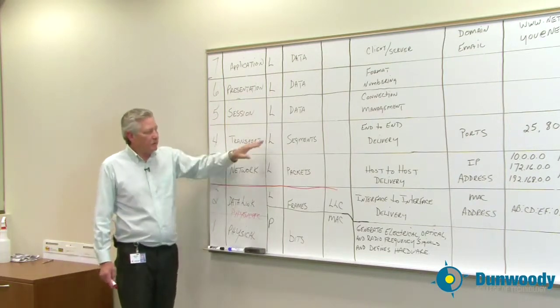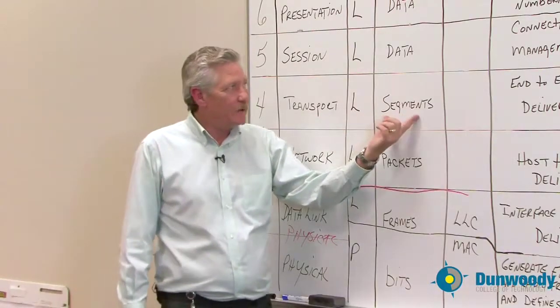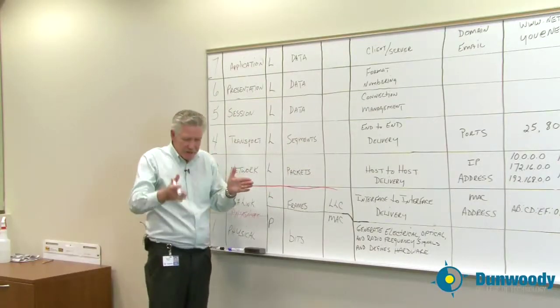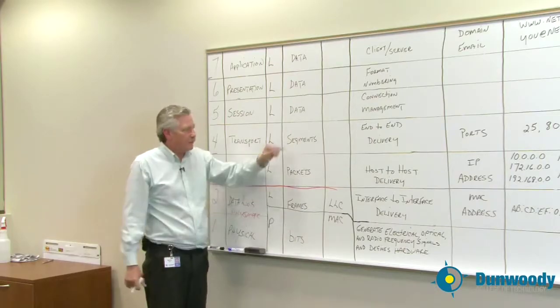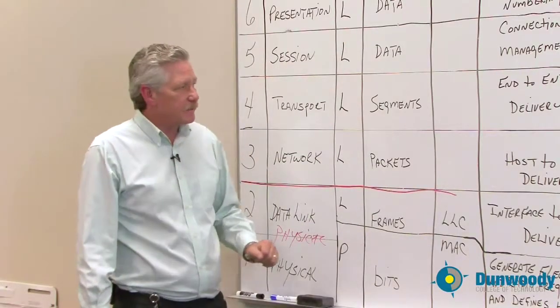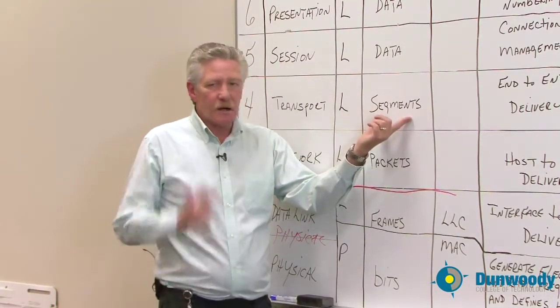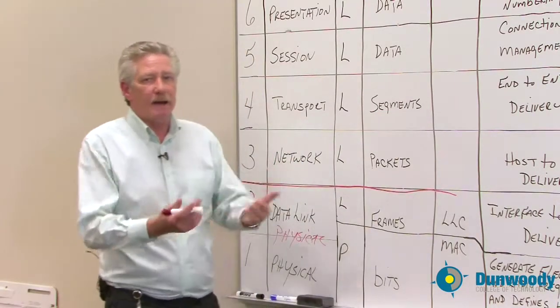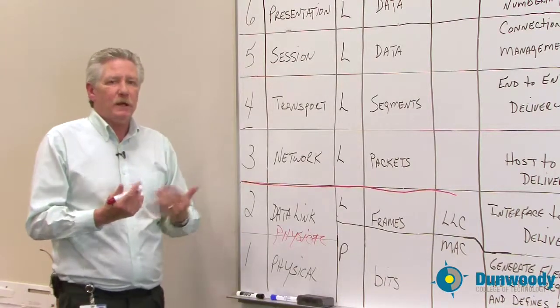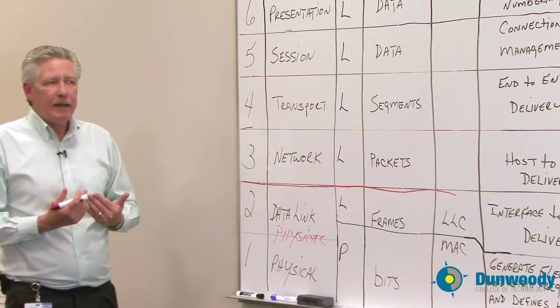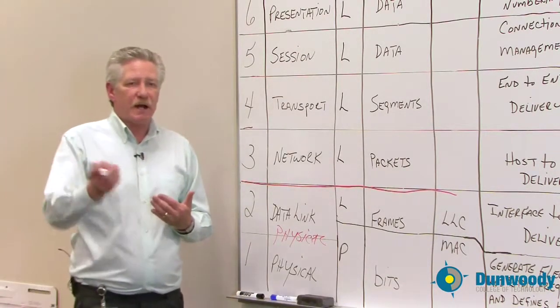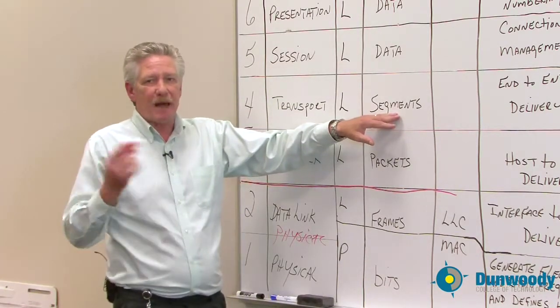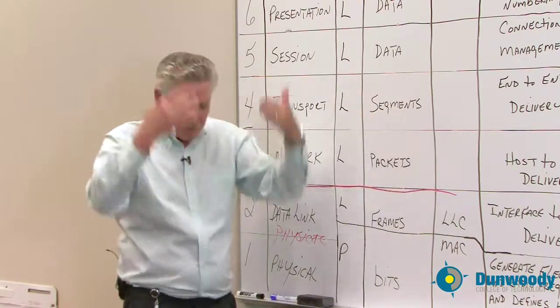Then we have the transport layer. Once again, it's logical. Here is where we take the data from the top and we segment it into smaller packets that can be handled by the rest of the system. The segments are numbered if you're using TCP IP. So when you're on a website and getting a web page through TCP IP, if part of that web page does not come across the circuit properly, TCP can ask for that packet to be re-sent so you get the whole web page.